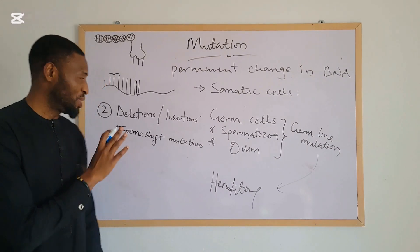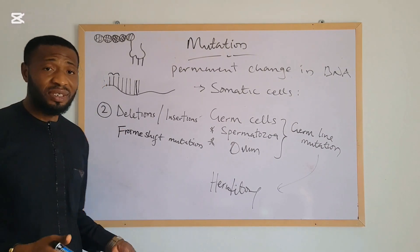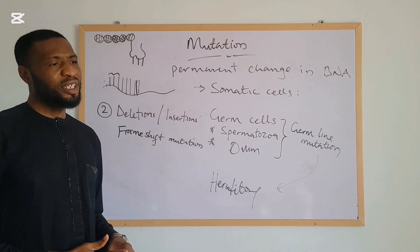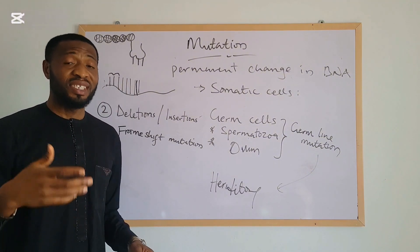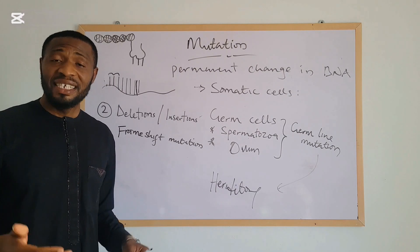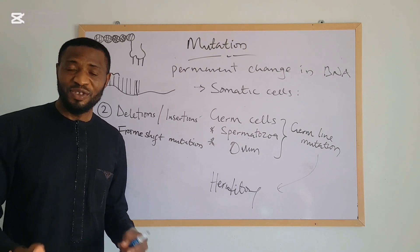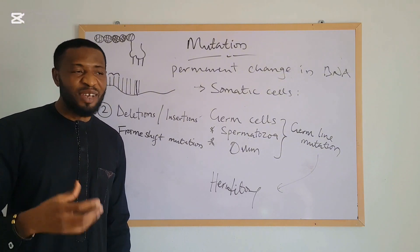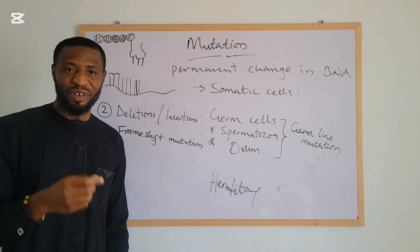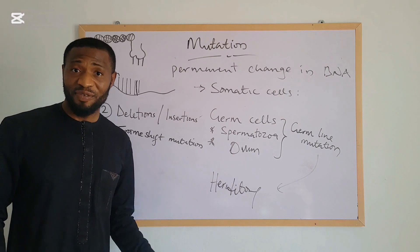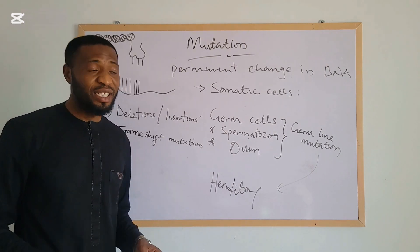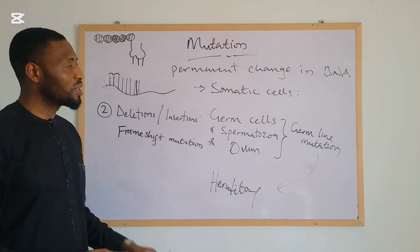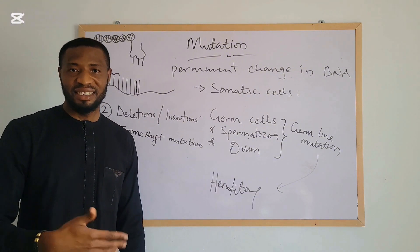These mutations can happen in coding regions and they can happen in non-coding regions. Mutations in non-coding regions are important because they are responsible for regulation of gene expression. If there is a problem with that regulation, gene expression can be affected, and that can also lead to genetic diseases.